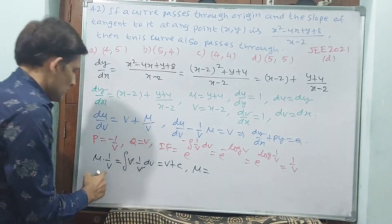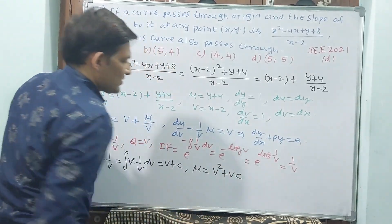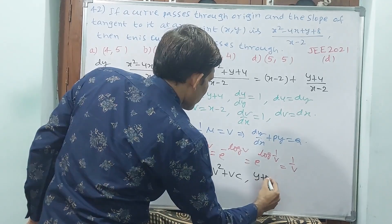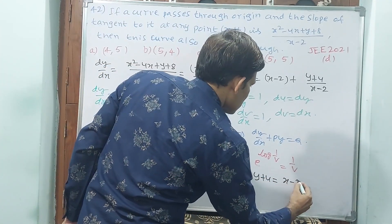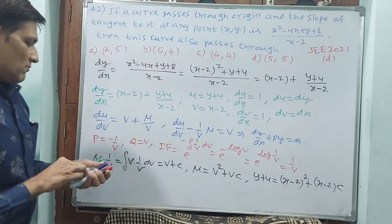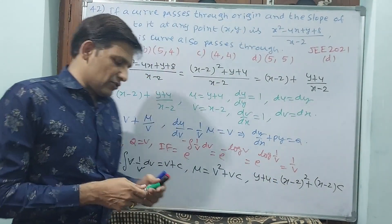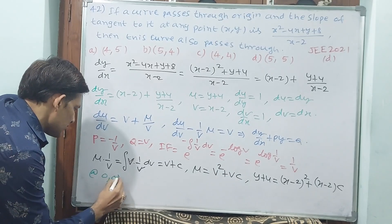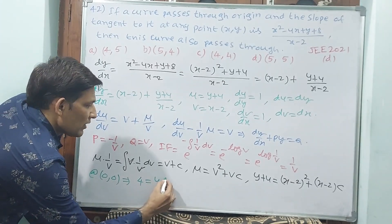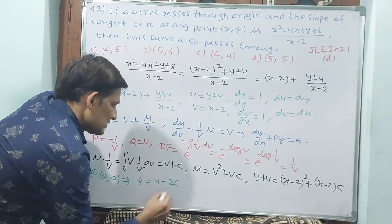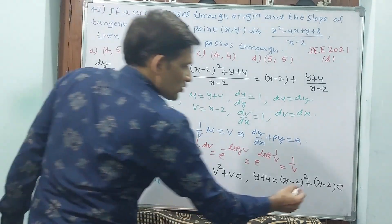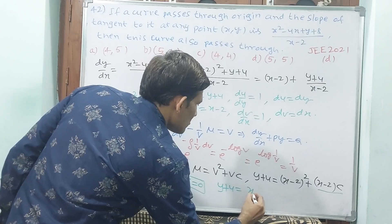Now what about u? You send this side: v² + vc or cv. Now we change u and v. What is u? y + 4. y + 4 equals, what is v? (x - 2)². (x - 2)² + (x - 2)c. Now both are passing through origin means x also 0, y also 0. At (0,0), y is 0, that means 4 equals (0 - 2)², 4, plus (0 - 2), -2c. -2c equals 4 - 4, 0. So c equals 0. When c equals 0, this term you need not write. That means y + 4 equals (x - 2)².